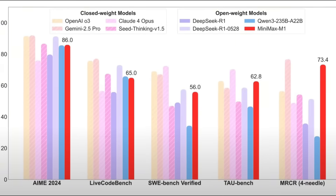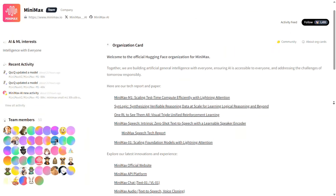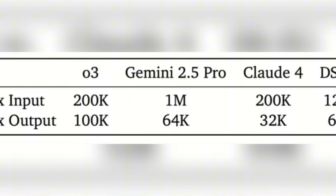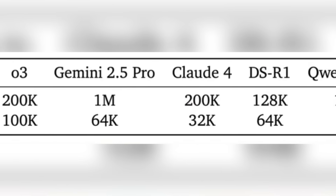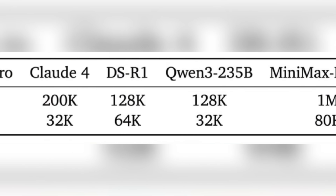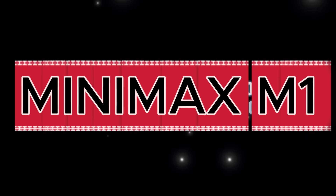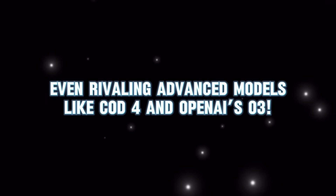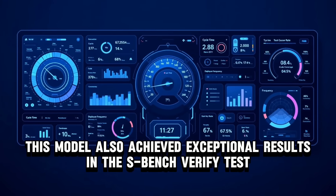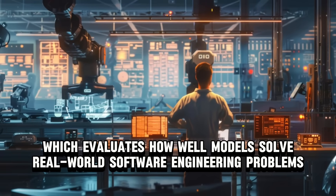Minimax has launched its first open-source large-scale model in its recent projects, built with a hybrid architecture and called Minimax M1. The Minimax M1 model excels at complex productivity-related tasks and consistently outperforms many closed-source models, even rivaling advanced models like SOD4 and OpenAI's O3. This model also achieved exceptional results in the SWEBench Verify test, which evaluates how well models solve real-world software engineering problems.